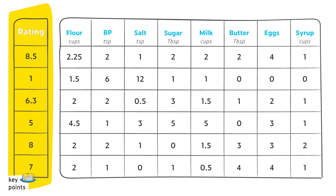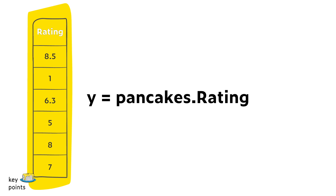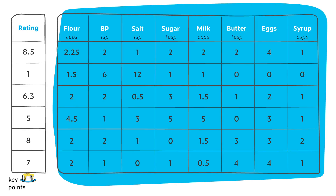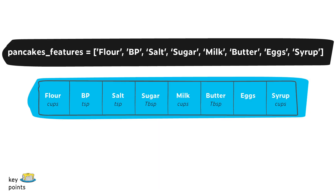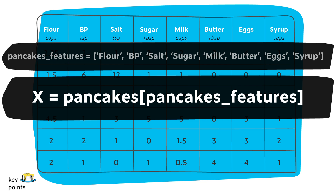We're going to create a series, which we'll refer to as lowercase y, in order to represent our prediction target, which is our pancake rating. So we would run code that looks like this: y equals pancakes dot rating. To create our features data frame, we'll create an object called capital X. The first chunk will be a list with the column names we want to include as features: pancakes_features equals flour, baking powder, salt, sugar, milk, butter, eggs, and syrup.